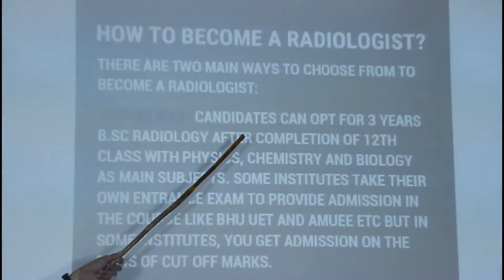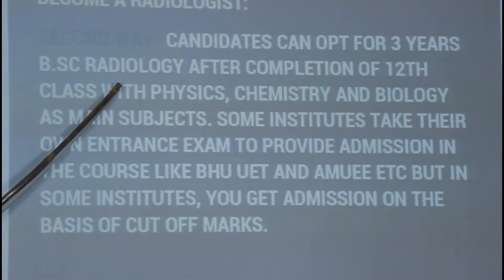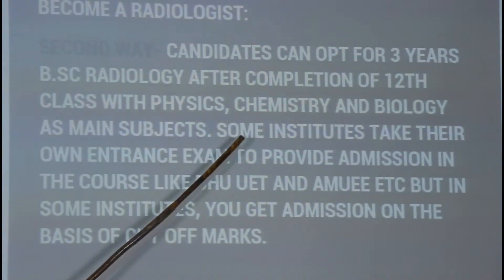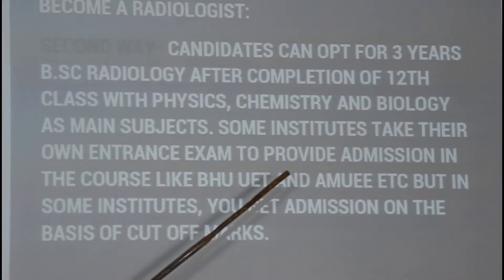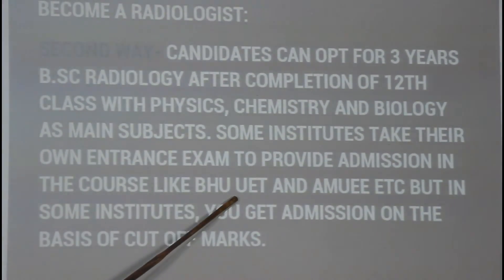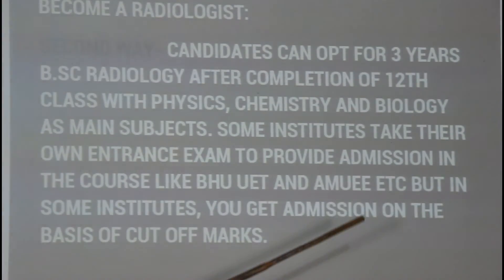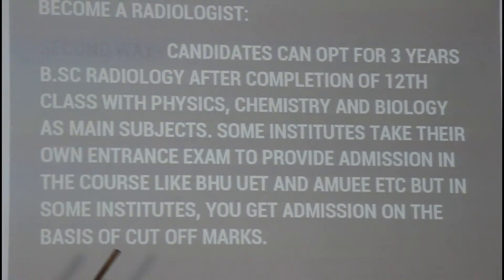However, if you could not get admission in the MBBS course, you can adopt the other way. The second way is: candidates can opt for a three-year BSc in radiology after completion of 12th class with physics, chemistry, and biology as main subjects. Some institutes take their own entrance exams to provide admission in the course, like BHU, UET, and AMUEE. But in some institutes you get admission on the basis of cutoff marks. After doing your BSc, you can go for postgraduation courses like MSc in radiology to become a radiologist.